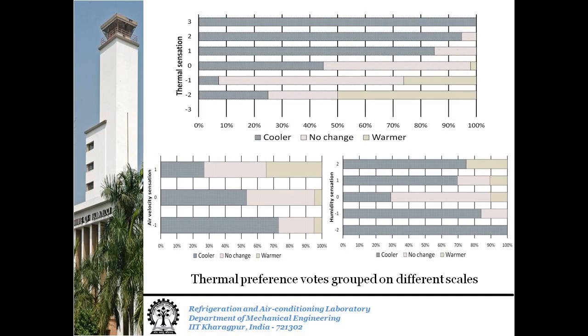Majority of the votes were for a preference of feeling cooler. Cross-checking air movement with thermal preference votes, we see that more than 20% of the respondents who felt air movement was still did not prefer to feel cooler. This shows that air movement is not associated just with cooling by these subjects. Students who felt the air was breezy do not necessarily want to be warmer though, which speaks to some excellent acclimatization with high air velocities.